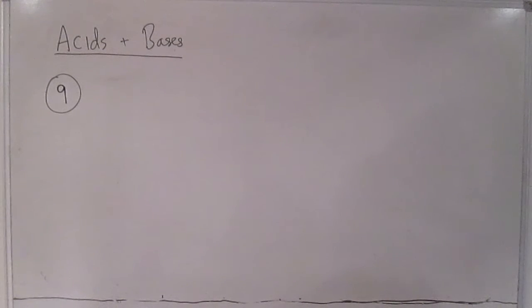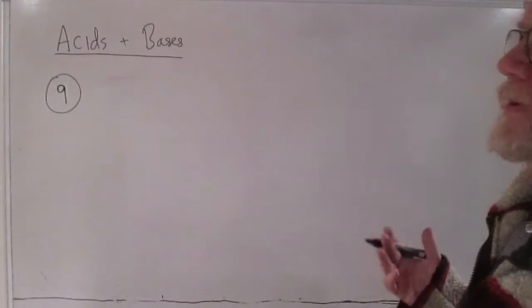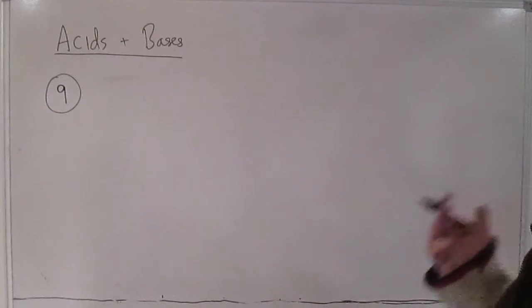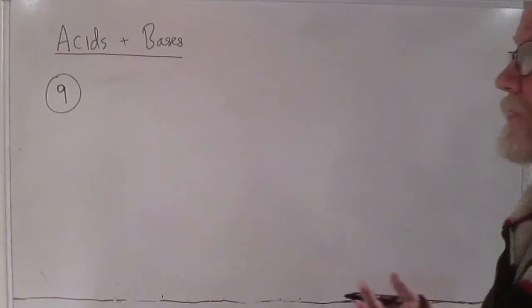Question 9 introduces this term, dibasic acid. You can think of that as just meaning how many acidic hydrogens there are per molecule of acid.